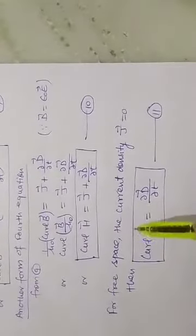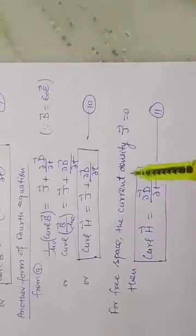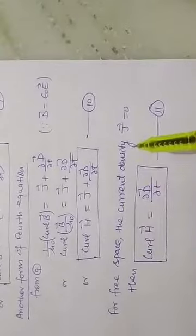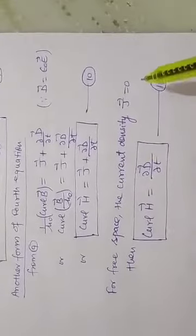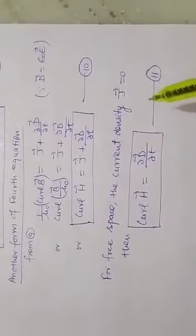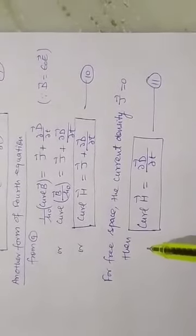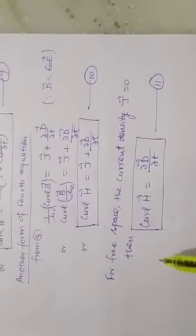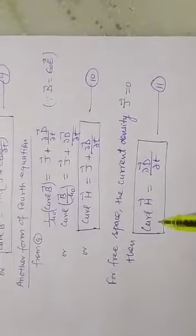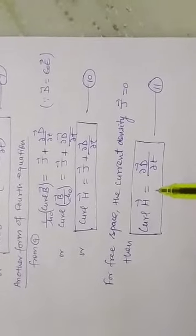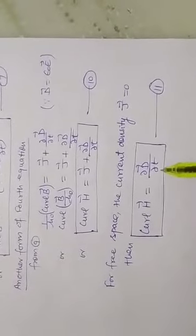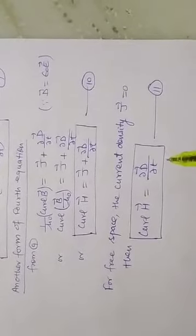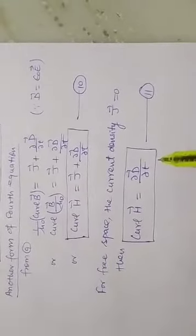For free space, the current density J vector is equal to zero. Then the fourth equation becomes: curl H vector is equal to ∂D/∂t.